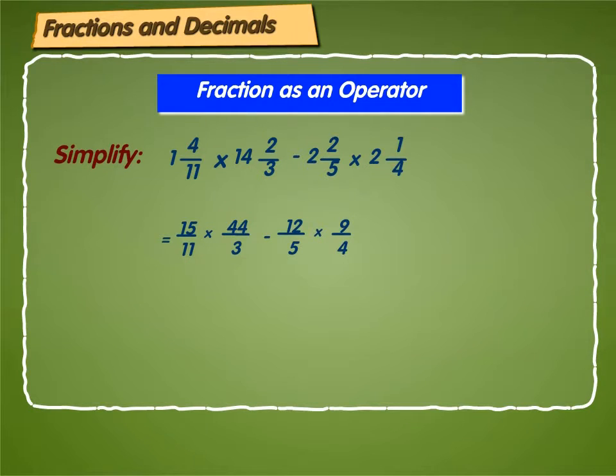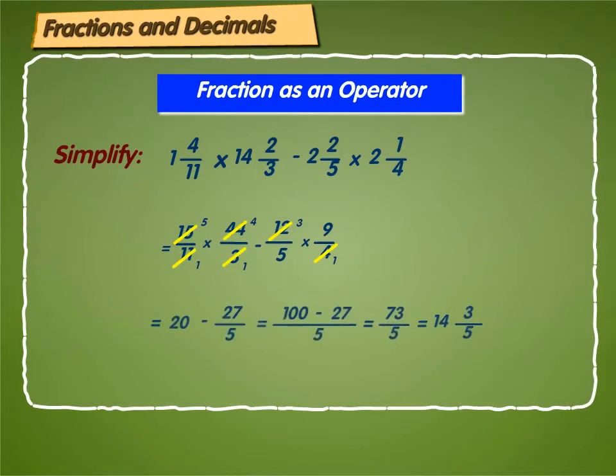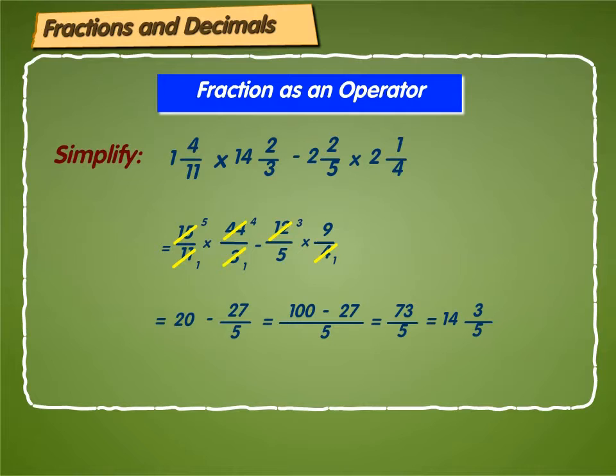We cancel numerator and denominator by the common factors. We get is equal to 20 minus 27 by 5 is equal to 100 minus 27 by 5 is equal to 73 by 5 is equal to 14, 3 by 5.